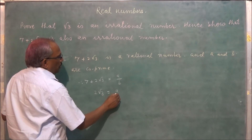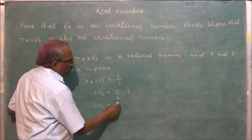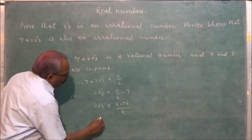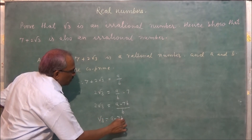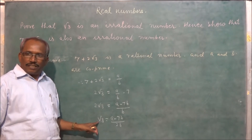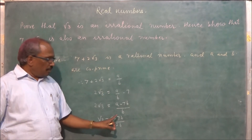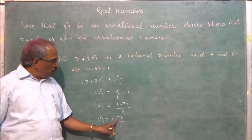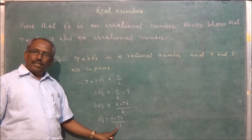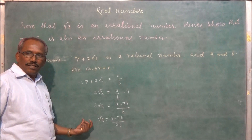So 2 root 3 is equal to a upon b minus 7, which gives 2 root 3 equal to a minus 7b upon b, therefore root 3 equals a minus 7b upon 2b. The left hand side is root 3, which is an irrational number. But a minus 7b upon 2b — since A and B are integers, A minus 7B is an integer, so integer upon integer is a rational number.